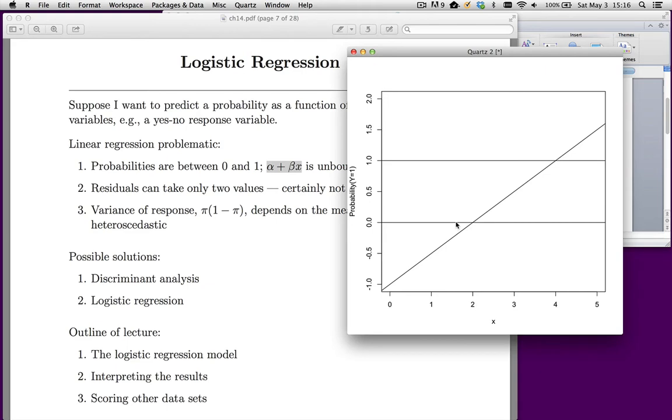Now, let's say that the relationship between the probability that y is 1 and x, we naively throw this line on it. Now, the problem with this is you have an area up here where the predicted values exceed 1. And we all know we can't have probabilities greater than 1.